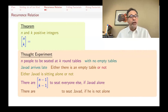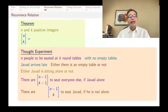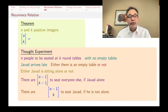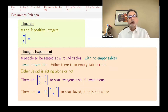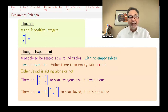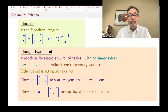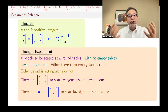If Javad is going to be alone, he sits at that one empty table. The remaining n minus 1 people sit around k minus 1 non-empty tables, giving n-1 bracket k-1 ways. If Javad is not sitting alone, we first seat everybody else around k non-empty tables — that's n-1 bracket k ways — and then Javad arrives and we pick any one of the n minus 1 seated people and tell Javad to sit to that person's left. So there are n minus 1 choices. Therefore n-bracket-k equals (n-1) bracket (k-1) plus (n-1) times (n-1) bracket k. This recurrence relation allows us to generate larger Stirling numbers from smaller ones.